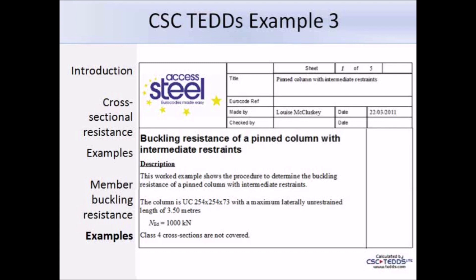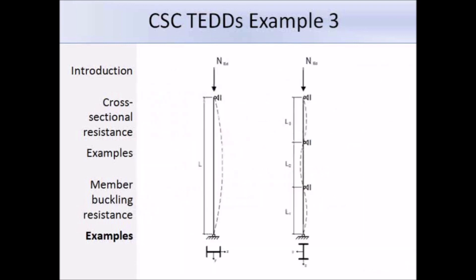The diagram shows that on the left the column is free to buckle about the minor axis, and on the right it is restrained at various points along the major axis. The end conditions are both pinned, so we use an effective length factor of 1.